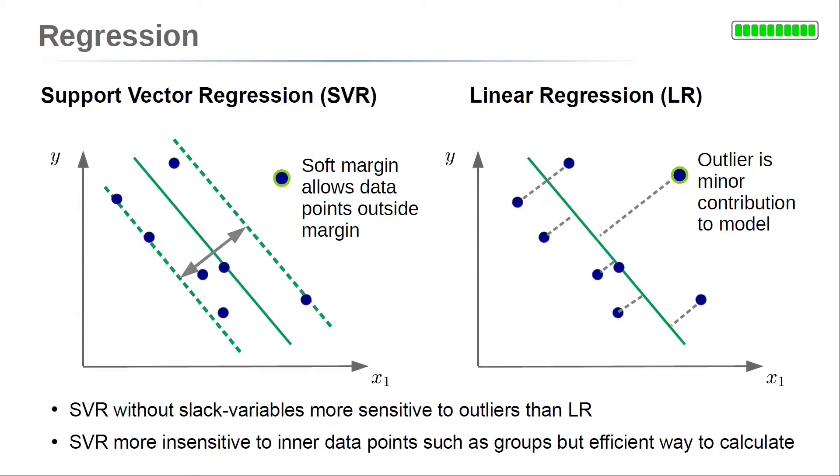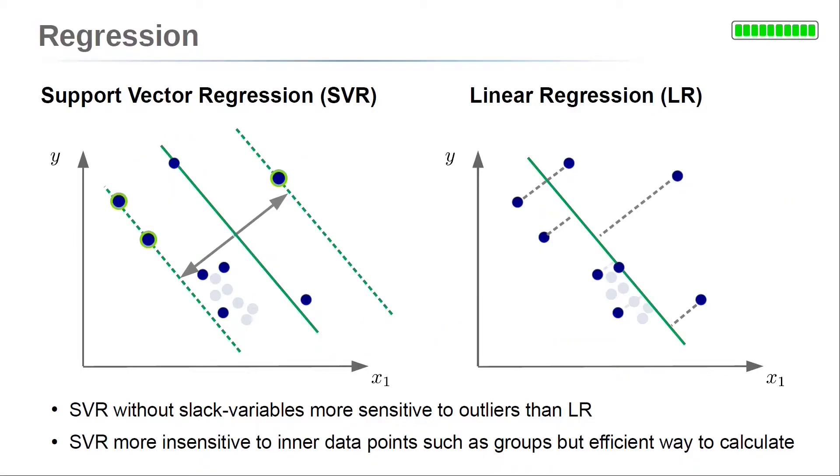However, if we take soft margins, the support vector regression becomes more similar to the linear regression. So, in contrast to linear regression, support vector regression takes only the outermost data points into account.